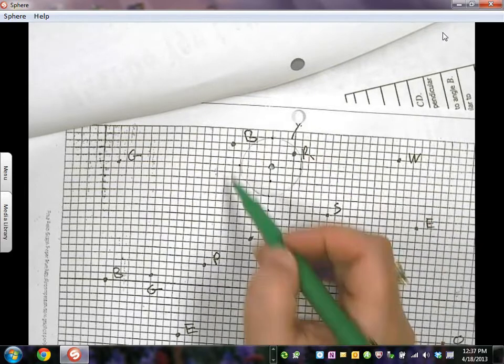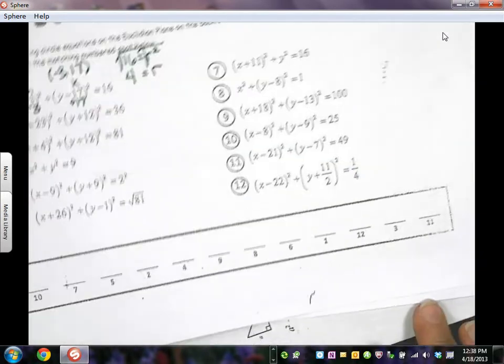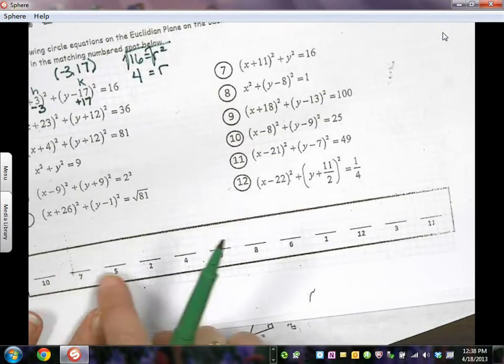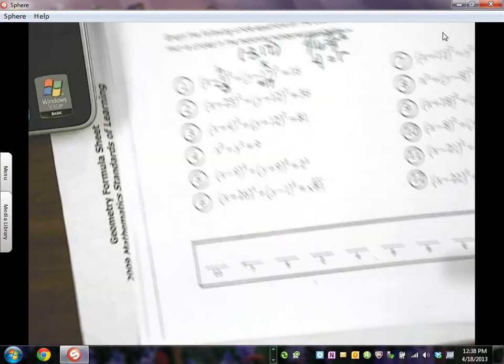And I would say, what letter is inside that circle? Well, it's R. So we would come down here to the bottom. We did number 1, and I would go find number 1 and put the letter R in that box.